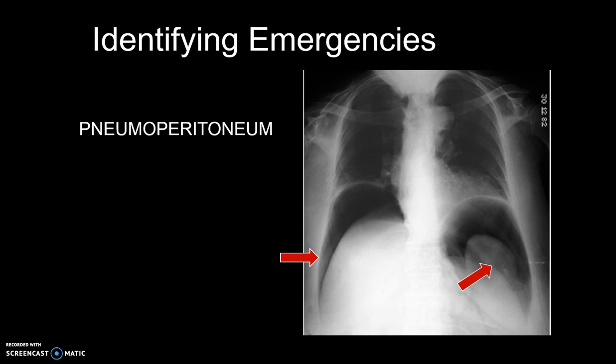This patient has a large volume of free gas under the diaphragm. Dark crescents have formed separating the thin diaphragm from the liver on the right and the bowel on the left. This patient had a perforated duodenal ulcer.